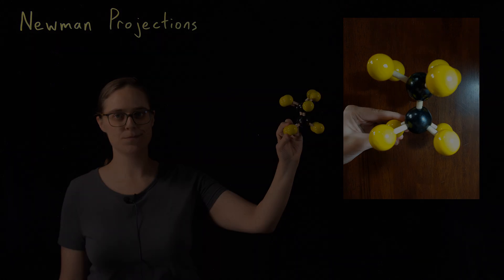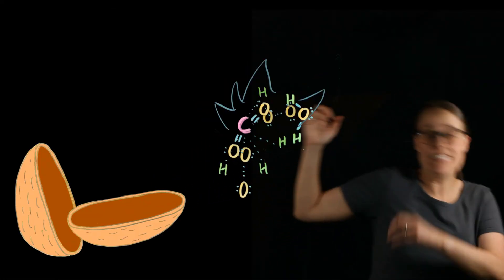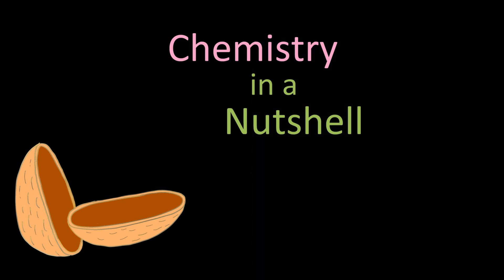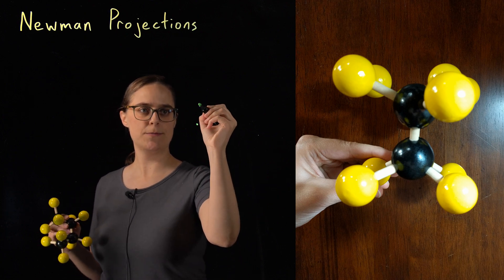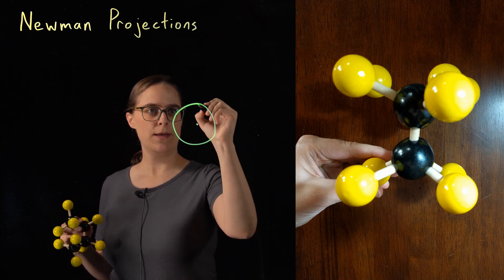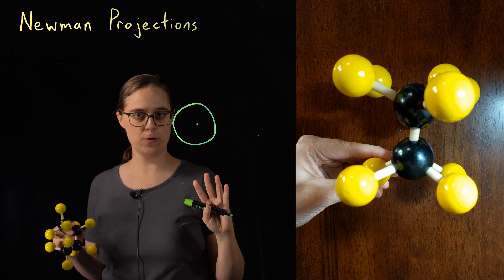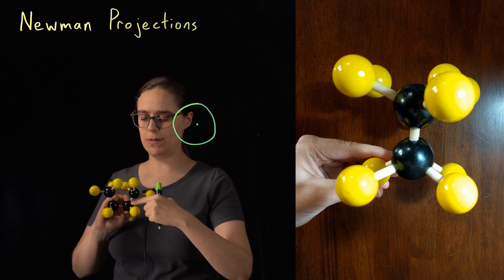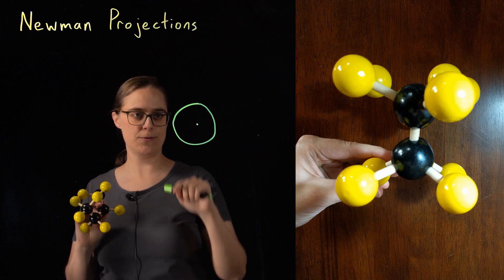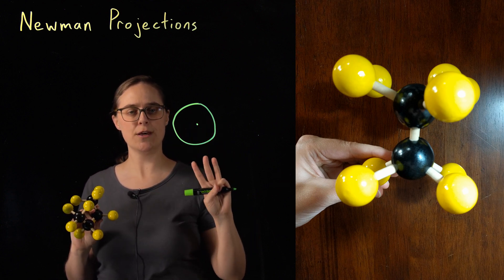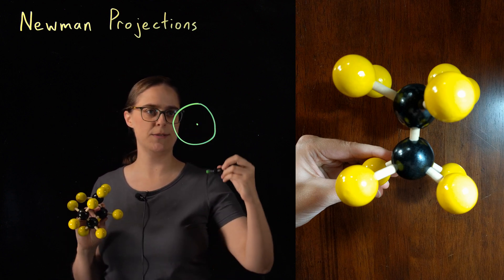Let's start drawing. The carbon in the front is represented by a dot, and the carbon in the back is represented by a circle. Each of these carbons has a total of four bonds, but one of those bonds is between these two carbons. We can't really see that from this orientation, so I just need to draw the other three bonds on each of these carbons.